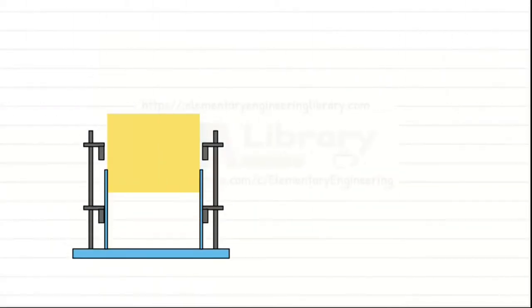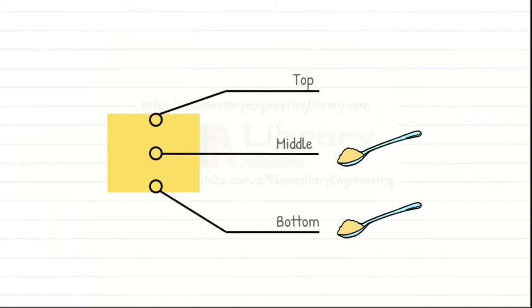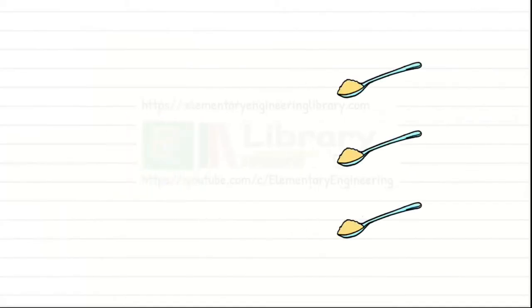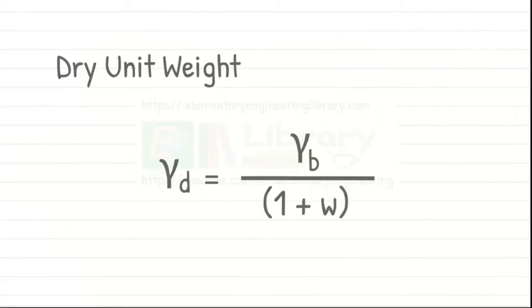We take a small representative sample from bottom, middle and top of the mold and determine the water content of the compacted soil by any of the water content determination methods. Then, we calculate dry unit weight of compacted soil by a known relationship.